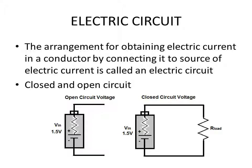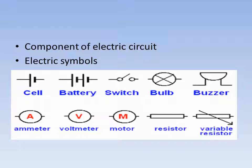From the figure you can see the open circuit and closed circuit. The essential components of an electric circuit include the source of electric current such as a cell or battery, connecting wires which are generally insulated copper wires, a key or switch, and an electrical appliance such as an electric bulb. Standard symbols are used for cell, battery, switch, bulb, buzzer, ammeter, voltmeter, motor, resistor, and variable resistor — these must be memorized and practiced.